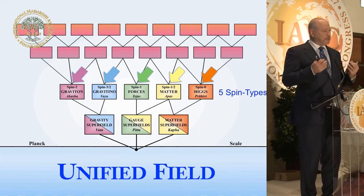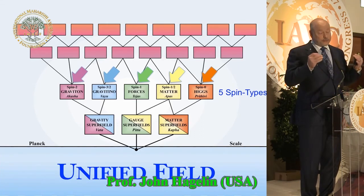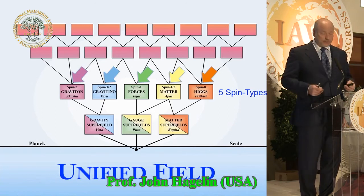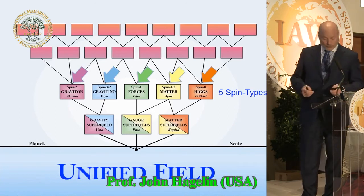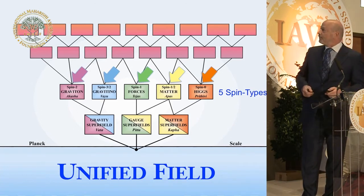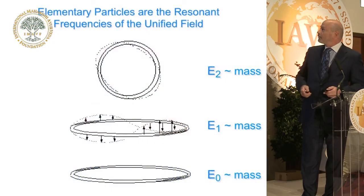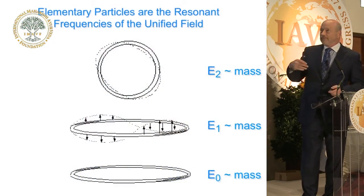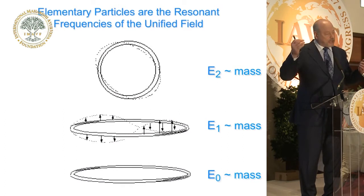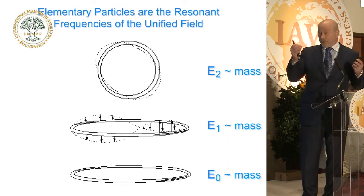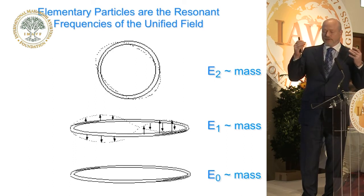These five spins are really the fundamental essences — the building blocks of creation revealed by modern physics. The physical universe comprised of elementary particles, those building blocks we call the particles of nature, are just the different reverberant frequencies of the unified field.